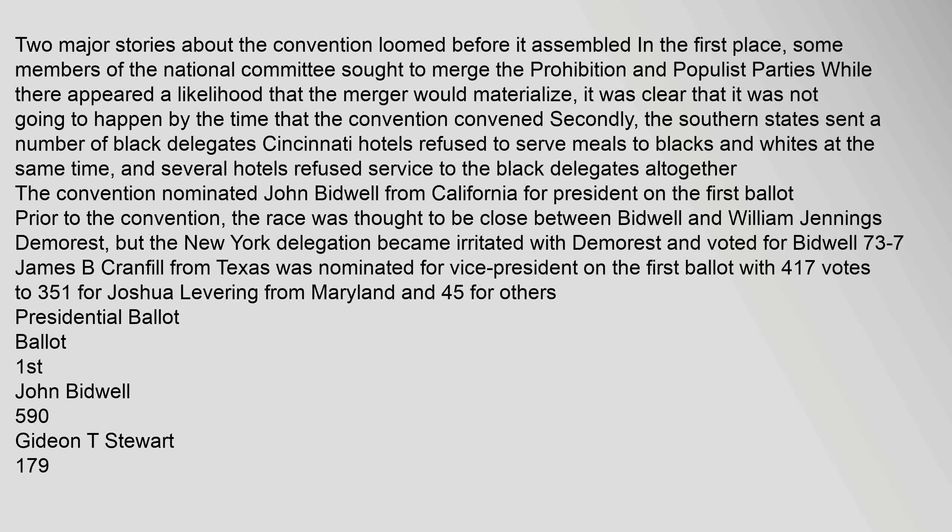Two major stories loomed before the convention. First, some members of the National Committee sought to merge the Prohibition and Populist parties — it was clear by the time the convention convened that this would not happen. Second, the southern states sent a number of Black delegates, but Cincinnati hotels refused to serve meals to Blacks and whites at the same time, and several hotels refused service to the Black delegates altogether. The convention nominated John Bidwell from California for president on the first ballot.